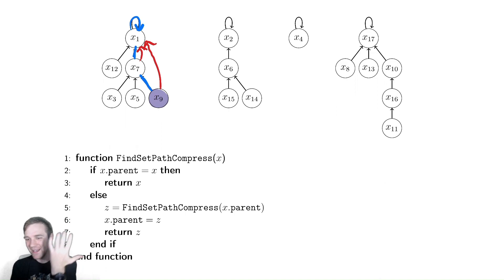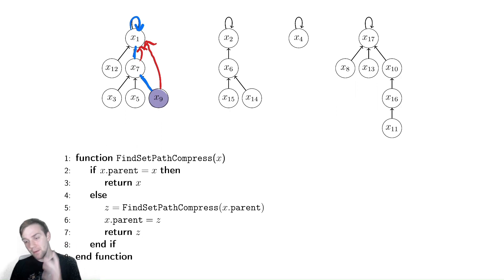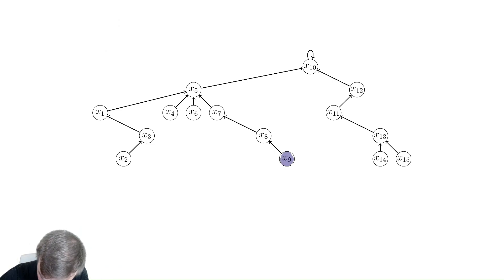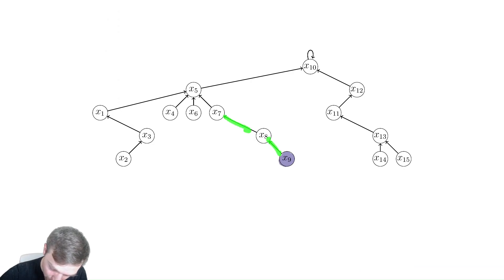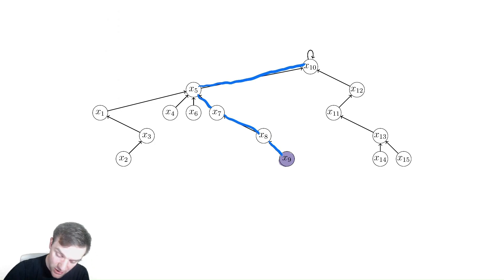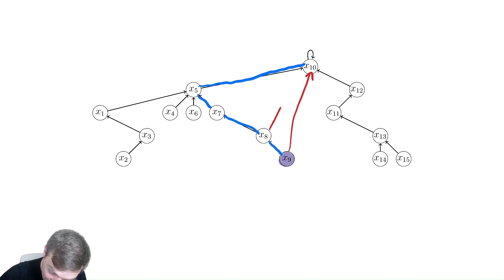It's not obvious — I didn't reduce the height by doing this. It just means that if I need to look up x9 in the future, it's better. So let's look at a harder example. Let's imagine I wanted to find the set for x9 here. If I did that I would go up, up, up, up. So let's trace that path again in blue like we did before. We trace the path we took, and then we're going to make every single node in that path point at x10 instead.